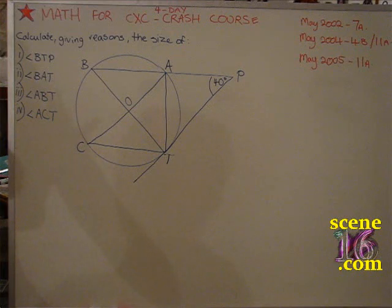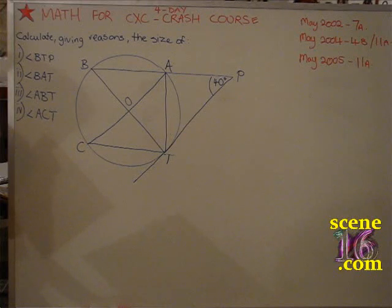Is this all the information that the question gave us? Make sure we have all the information. Okay, so A, B, C, T is a circle.